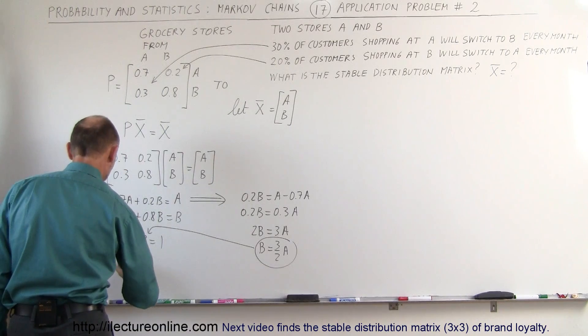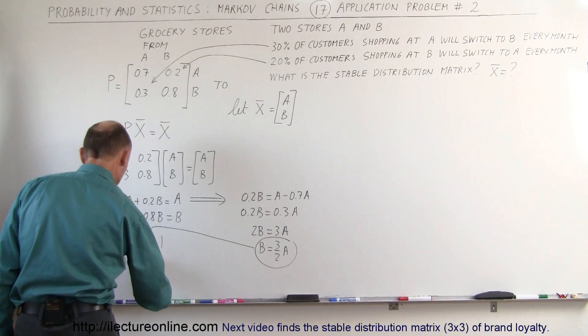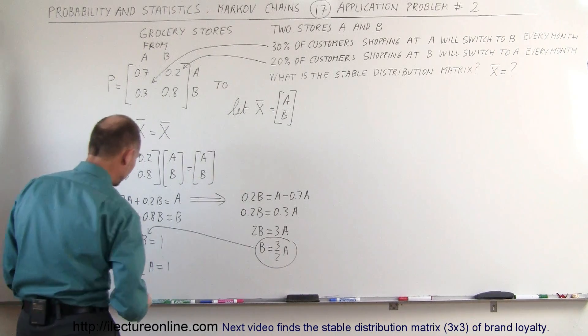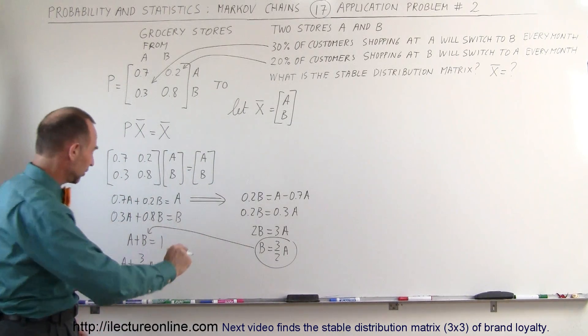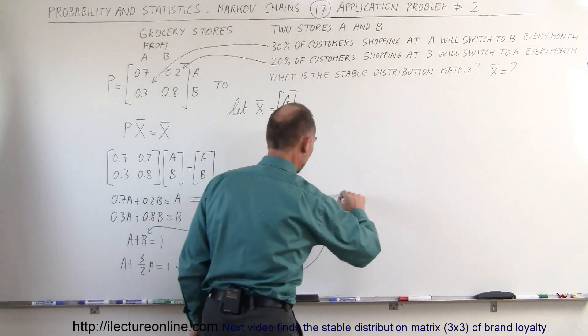When we do that, we get A plus 3 divided by 2A is equal to 1. So what we're going to do now is move that over to this side because that way I have a little bit more room to work with.